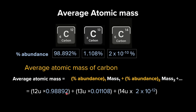Using the summation formula, the average atomic mass of carbon = (12u × 0.98892) + (13u × 0.01108) + (14u × 2 × 10⁻¹²). The last term is negligible. Solving, we get 12.011 u. As a mental check: whichever isotope has the highest abundance, the average atomic mass will be closest to that isotope's mass — which is exactly what we see here.